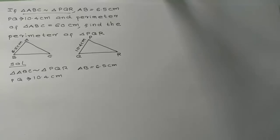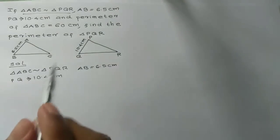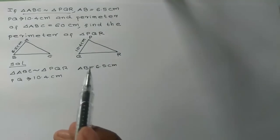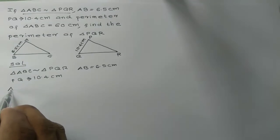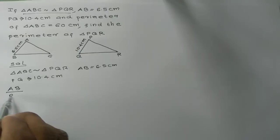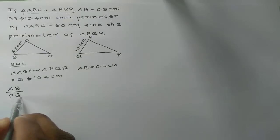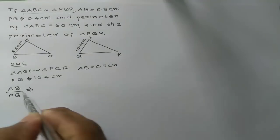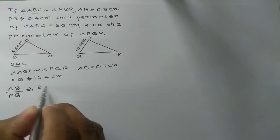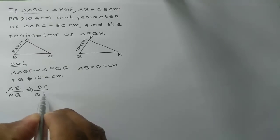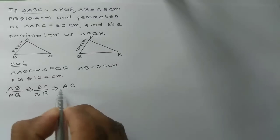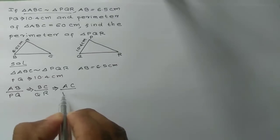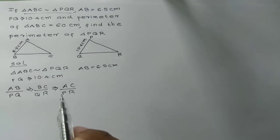We are going to use the similar triangle property: for triangle ABC similar to triangle PQR, AB divided by PQ equals BC divided by QR equals AC divided by PR.